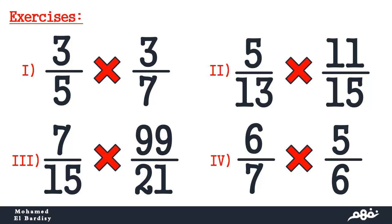I consider 3 over 5 as a over b and 3 over 7 as c over d, so I multiply a by c and b by d. We have 3 times 3 over 5 times 7.